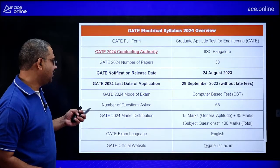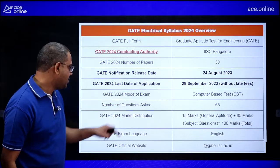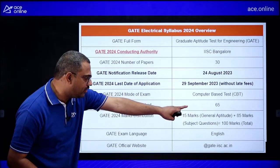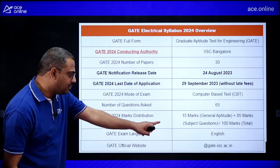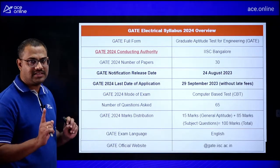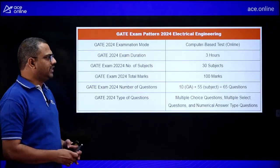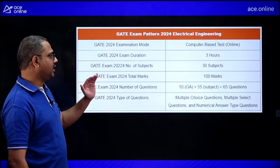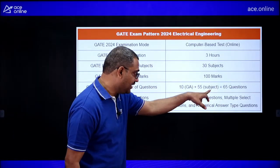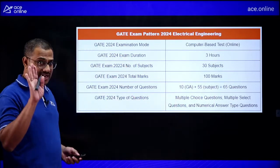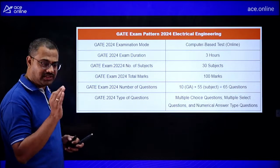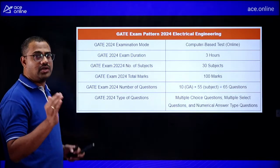The last date for GATE 2024 application is 29th September. Mode of exam is CBT with 65 questions — 15 in General Aptitude and 85 marks worth of subject questions — for a total of 100 marks. The exam language is English, duration is 3 hours, and the breakdown is: 10 General Aptitude questions and 55 core subject questions giving 100 marks.